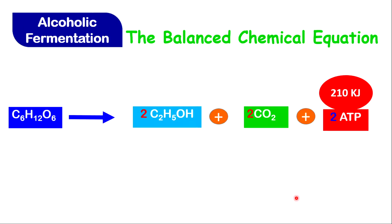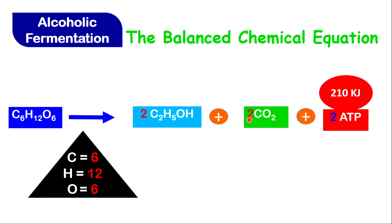The balanced chemical equation for alcoholic fermentation is: C6H12O6 forms 2 C2H5OH (ethanol) and 2 CO2. The number 2 in red is just to balance the equation so that on either side the atoms are the same. To balance this equation, both sides must have six carbon, 12 hydrogen, and six oxygen. You can verify: two times two gives four carbons from ethanol, plus two from CO2 equals six.